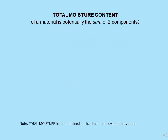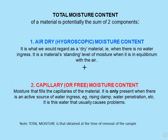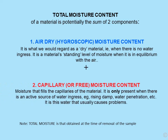The total moisture content of a material is potentially the sum of two components. The first component is known as the air dry or hygroscopic moisture content, and this is what we would regard as a dry material when there is absolutely no water ingress — it's a material's standing level of moisture when in equilibrium with the air. The second component is known as the capillary or free moisture content, and that is moisture that fills the capillaries of the material. This is the fraction which is only present where there's an active source of water ingress, e.g. rising damp.